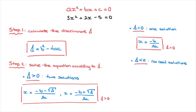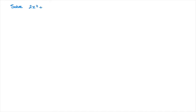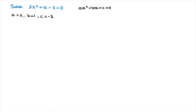We've now covered all the theory and seen all the formulas that we need to know. Now let's move on and work through some examples. Let's say we're asked to solve 2x squared plus x minus 3 equals to zero. This is clearly a quadratic equation, and comparing it to ax squared plus bx plus c equals to zero, we can see that a is equal to 2, b is equal to 1, and c is equal to negative 3. It's a good habit to always write the values of those coefficients.